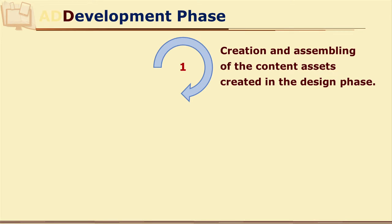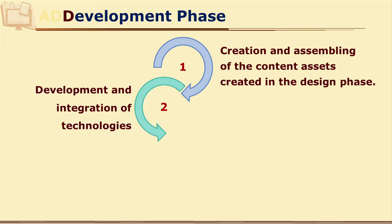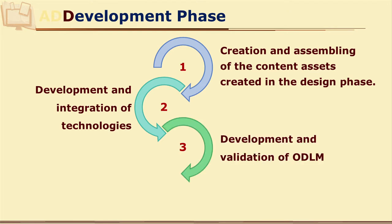When we develop small media pieces for any open and distance learning material — for example, a small video, an audio file, some text material, some illustrations — all these small pieces of material are called assets. Finally, you need to assemble all these assets and give one concrete integrated form to your ODL material. This integration and assembly happens at the development phase. You assemble it properly and bundle it, and you also validate the developed material.